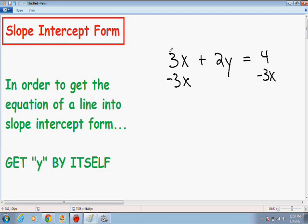So notice how the 3x's cancel out on the left hand side. And the only thing we are left with is 2y on the left hand side. And on the right hand side the only thing we are left with is negative 3x plus 4.